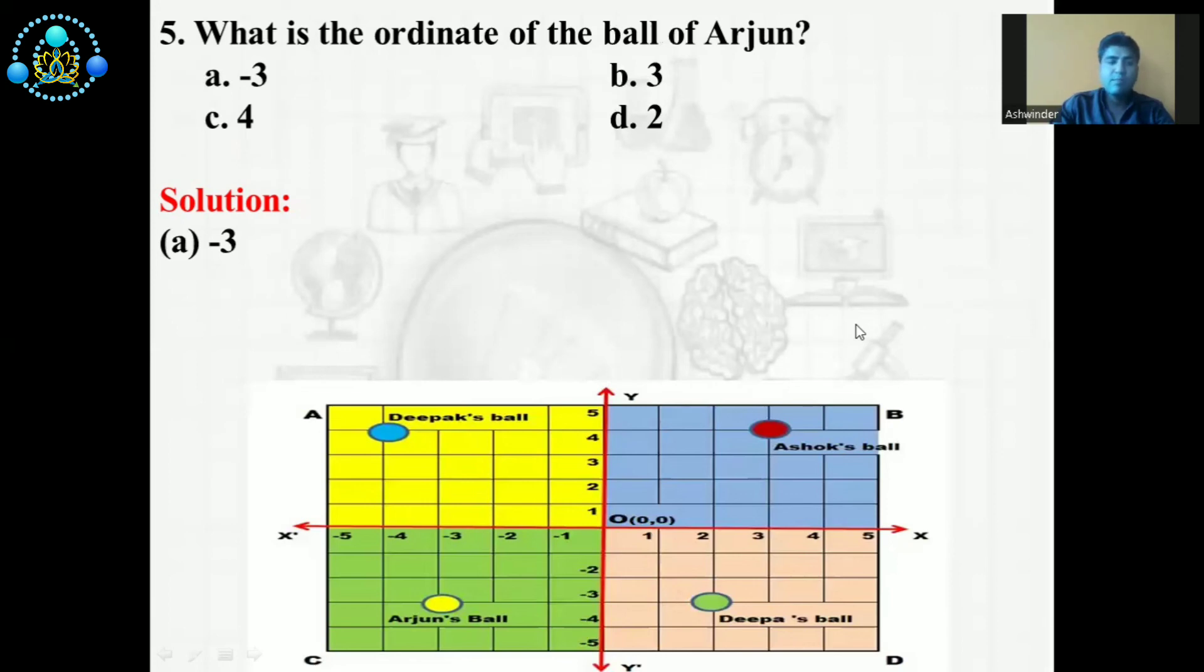So the correct answer is A, minus 3. Because the question is talking about Arjun, you will see Arjun's ball position. You can easily find out the ordinate. Ordinate means the y-axis. If you see the y-axis, that is minus 3. So the correct option is A. Thank you everyone.